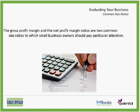The gross profit margin and the net profit margin ratio are two common size ratios to which small business owners should pay particular attention. Even small changes of 1% or 2% in the gross profit margin can affect a business severely. After all, if your profit margin drops from 5% of sales to 4% of sales, this means your profit has declined by almost 20%, which is alarming for any business.